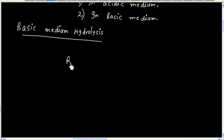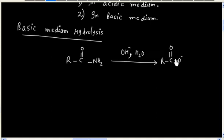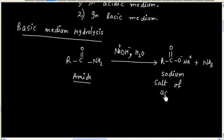If we have an amide and treat it with OH- in aqueous medium, it will give salt of acid. Let us say we have NaOH, in that case we will have sodium salt plus ammonia. So the amide will generate sodium salt of acid and ammonia.